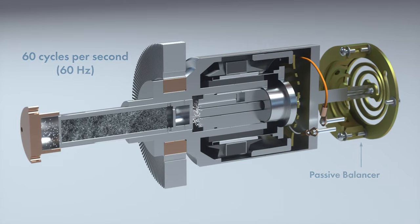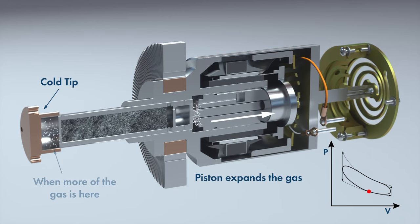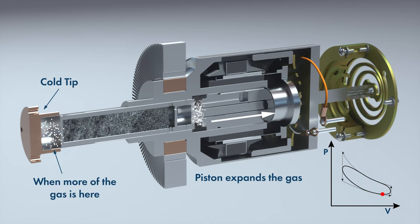The key to achieving the cooling effect is the relationship of the movement between the piston and displacer. When the displacer movement results in the bulk of the working gas being located between the displacer and cold tip, the piston expands the gas.